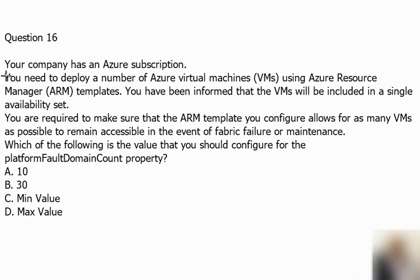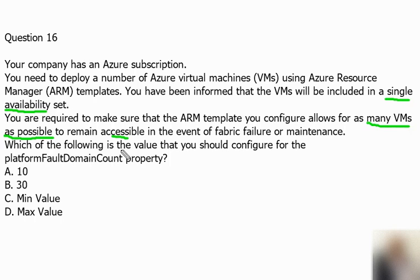Question 16: Your company has an Azure subscription. You need to deploy a number of virtual machines using Azure Resource Manager templates. You have been informed that the virtual machines will be included in a single Availability Set. You are required to make sure the ARM template allows as many VMs as possible to remain accessible in the event of a fabric failure or maintenance. Which value should you configure for the platform Fault Domain count property?